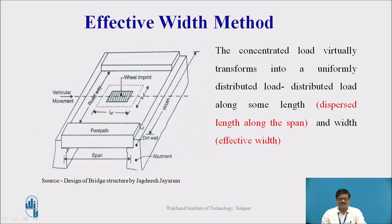In this effective width method, a concentrated load virtually transforms into a uniformly distributed load, which has been distributed along some length and width. The length, we call it dispersed length, and the width, we call it effective width. In the picture, we can see L-effective and B-effective. These dimensions we need to find. We have a specific equation to find the B-effective. As far as L-effective is considered, the dispersion is at an angle of 45 degrees.